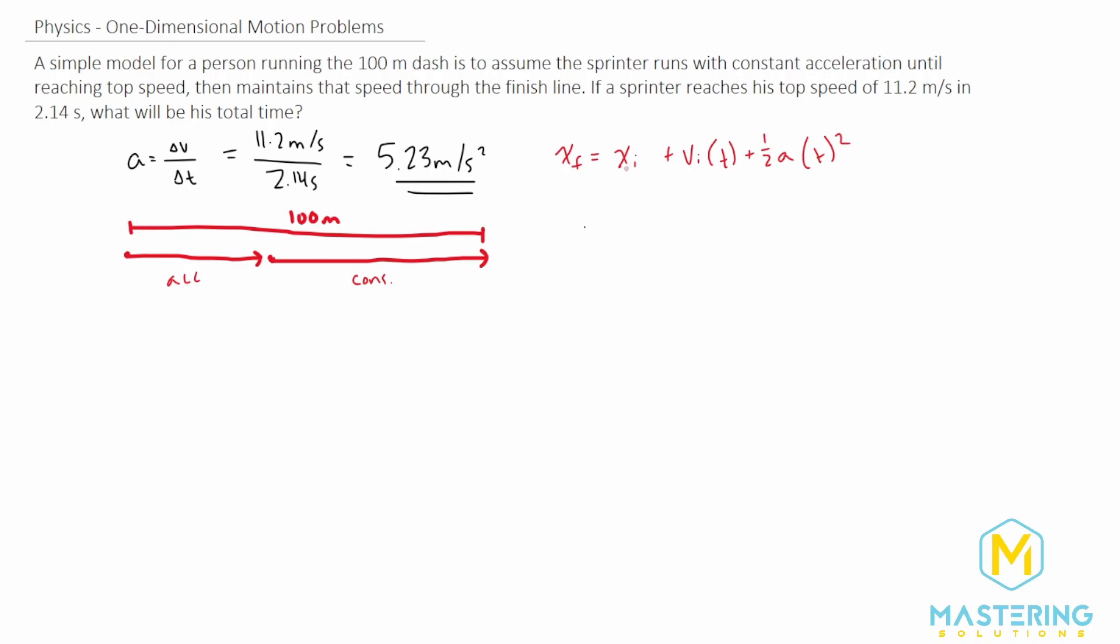The initial x for this is 0 - he's starting at the start of the race, so that goes away. Initial velocity is also 0, so that goes away too. So x_f for this first section equals 1/2*a*t².